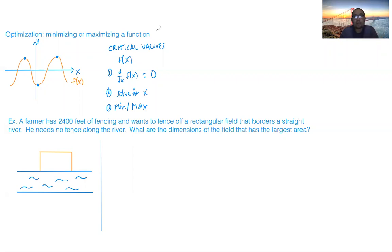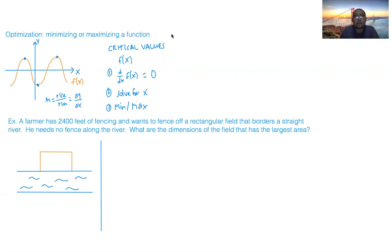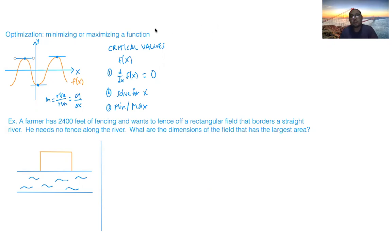Visually, if your function f of x is represented by this curve here, the critical values are going to fall where the slope is zero — at these three points. The slope m is represented by rise over run, or delta y over delta x. At these points, if we drop a tangent line, they would be perfectly horizontal, with no vertical change, meaning the slope is zero. These are your critical values.